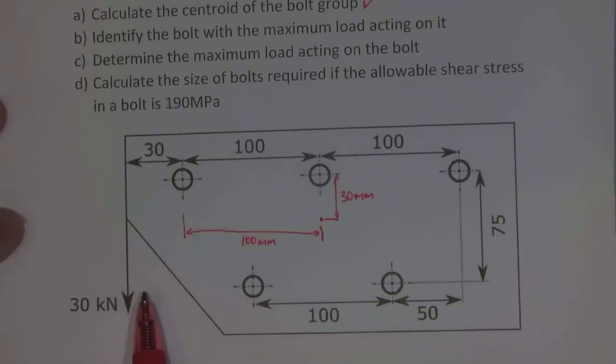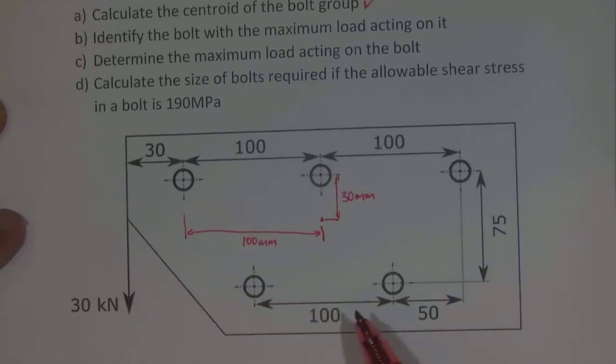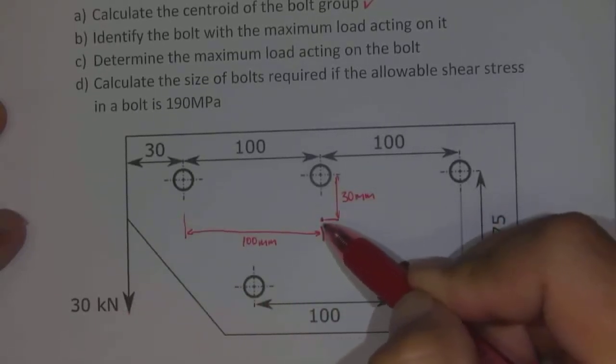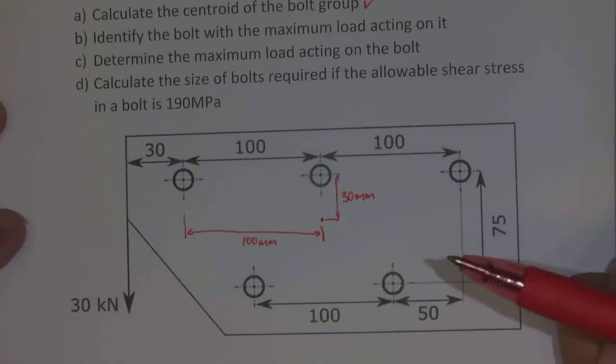Now how we'll do this is this 30 kilonewton load creates both a shear force and a torque around the bolt group that we have here. So the first step that we can look at is to try to calculate that torque and that shear force.